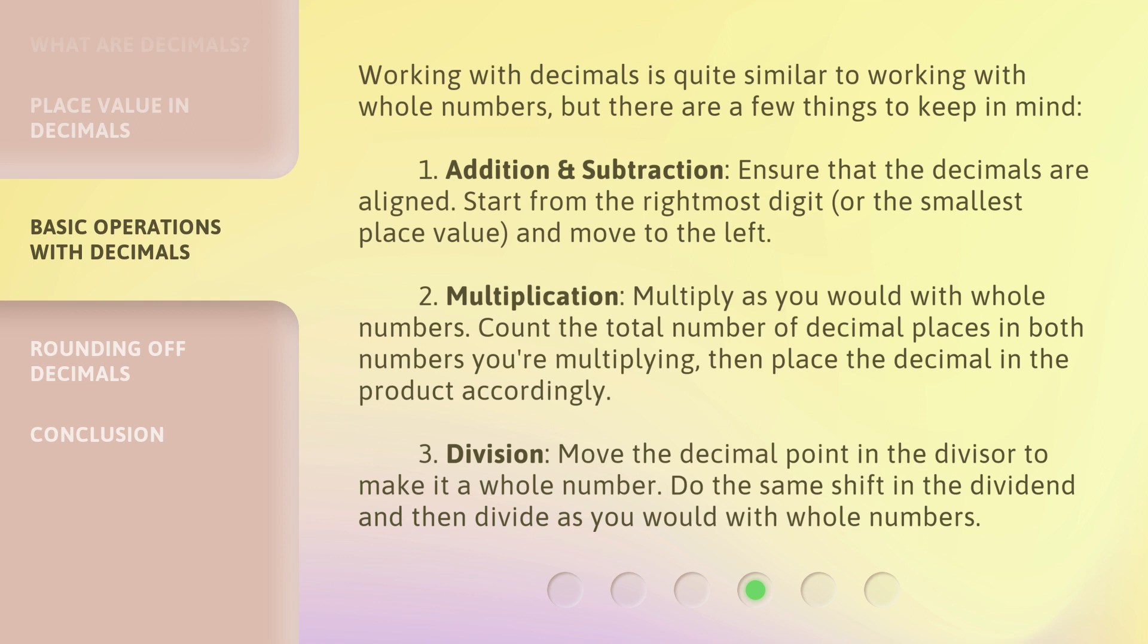2. Multiplication: Multiply as you would with whole numbers. Count the total number of decimal places in both numbers you're multiplying, then place the decimal in the product accordingly.